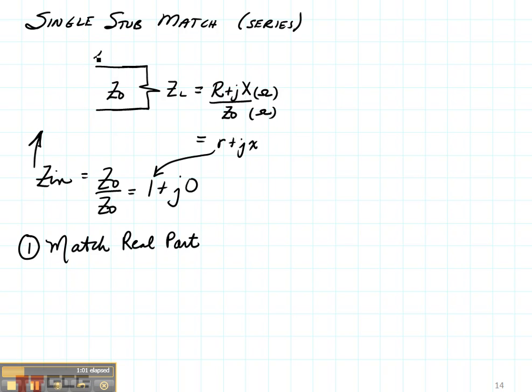To do that, we're just going to add a length of line which we're going to call d that allows the real part of our new load, our transformed load which we can call zl prime. We can have zl prime when it's normalized be equal to 1.